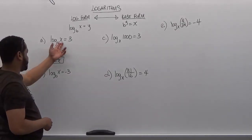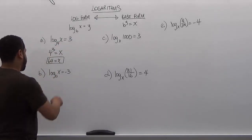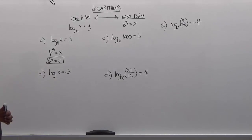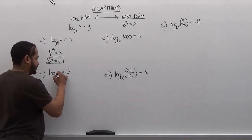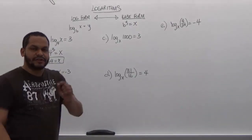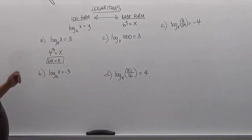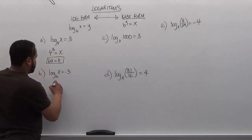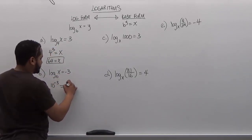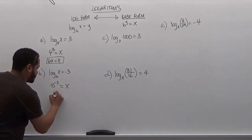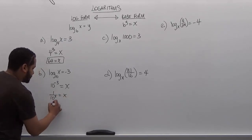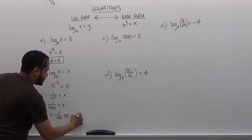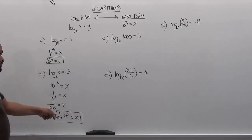Moving on to the second problem, we have a similar expression where we're looking for the term x. Here we have log of x is equivalent to negative 3. Whenever we see a log without a base, it automatically becomes 10, because it's in a decimal base of 10. So we have 10 to the negative third power. This becomes 1 over 10 to the third, which is 1 over 1000. So x equals 1/1000, or equivalently 0.001 — either answer is acceptable.